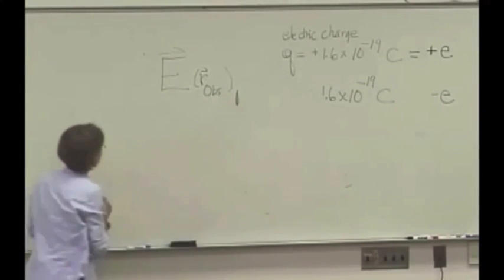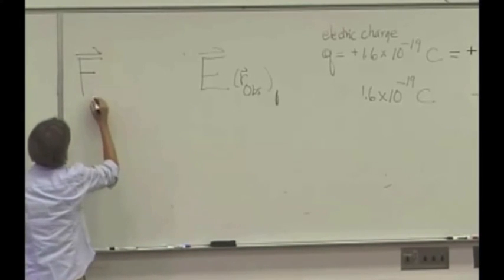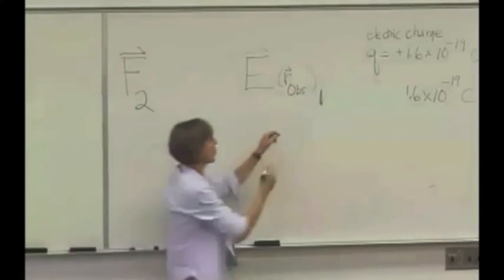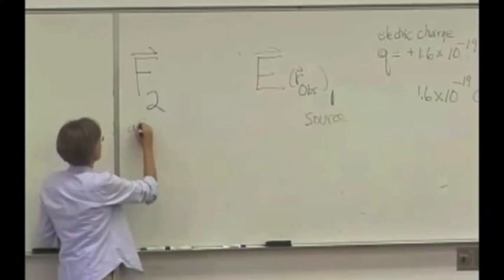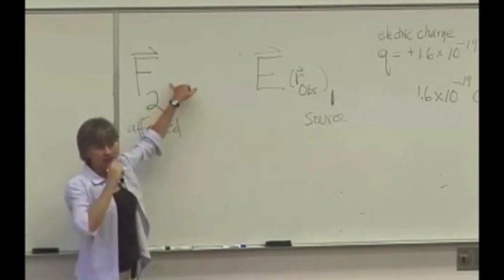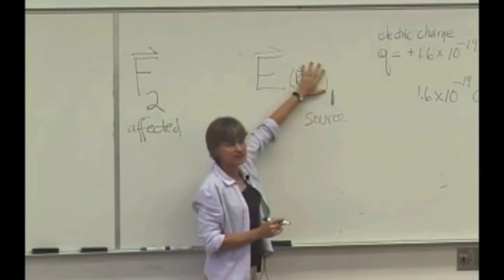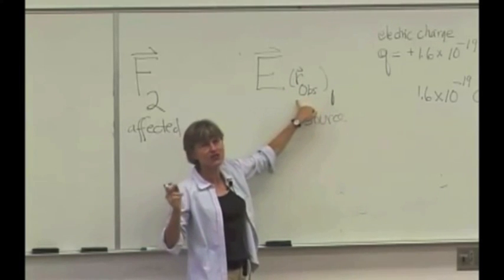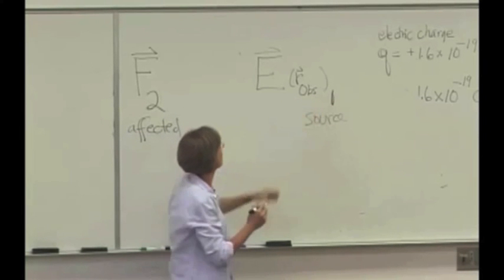We'll have a subscript 1. Then we observe a force on some particle that we're going to call 2, because this is a different particle. This is the source of the field, and this is the thing that's affected. In fact, usually when we write an electric field in a physics equation, we actually just leave that part out. But it's always implicit. There's always some location at which we're measuring the electric field. We always mean the electric field at some observation location.